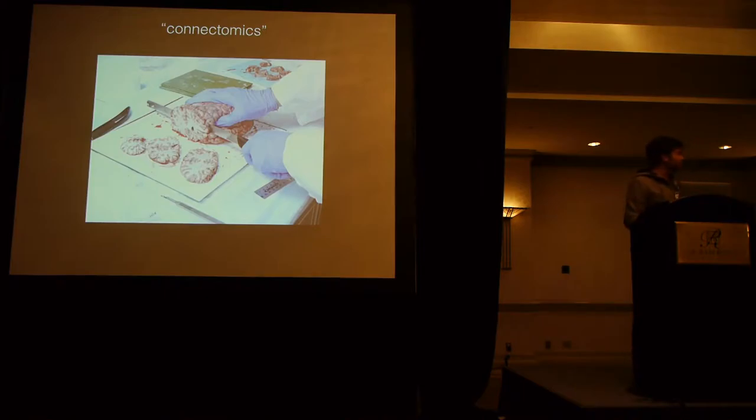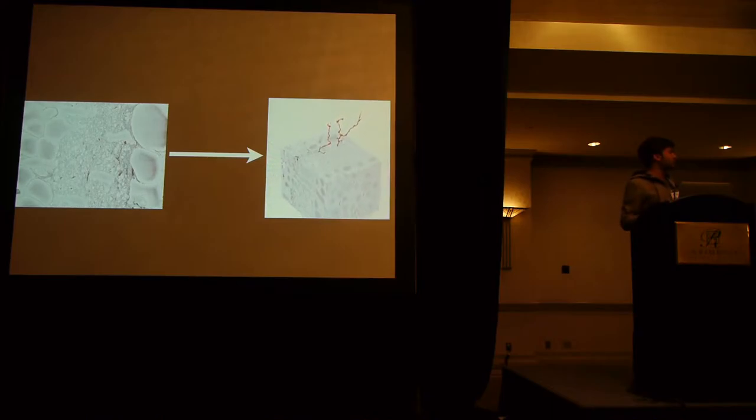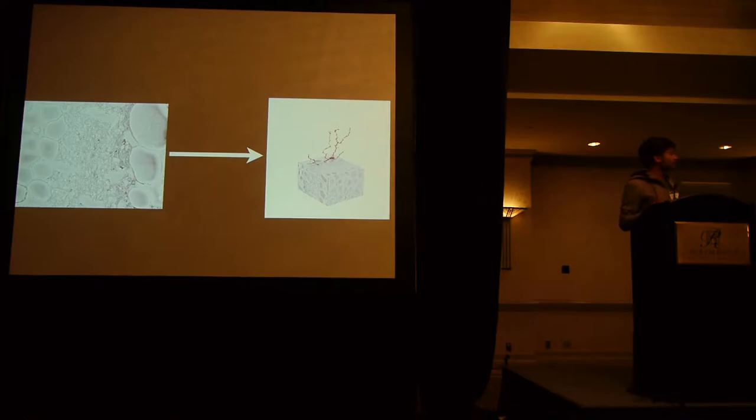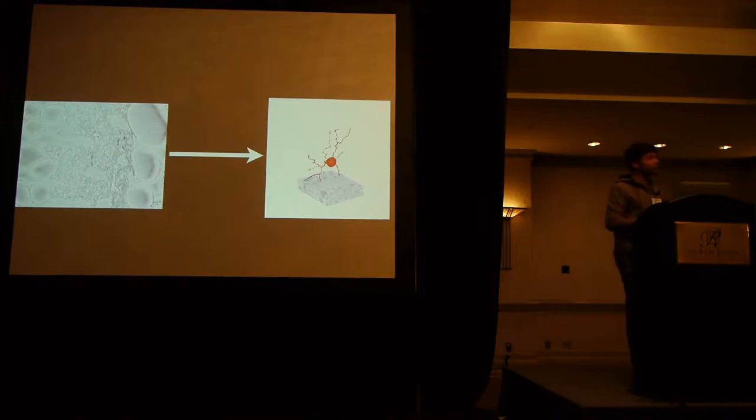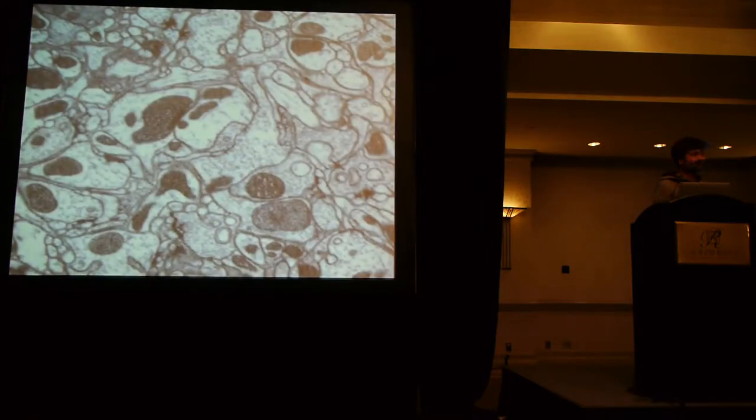But actually the real bottleneck is not the image acquisition process. It's in the image reconstruction phase. So we get these very large three-dimensional 8-bit intensity datasets, and we want to basically trace the wires in that data. And it turns out this is a reasonably hard problem, and it's also the entire bottleneck in this process of actually acquiring neural connectivity information. Here's a post of what that data looks like in a little bit more detail.